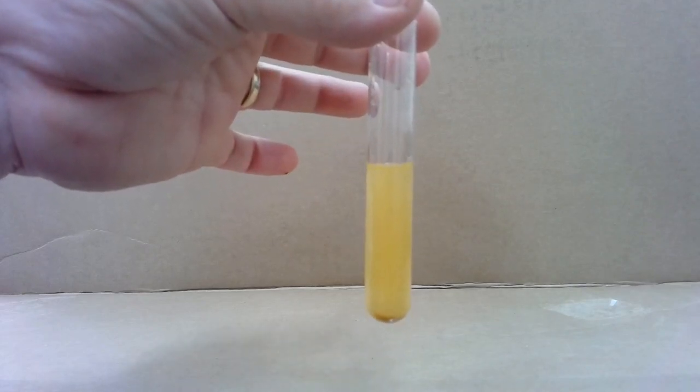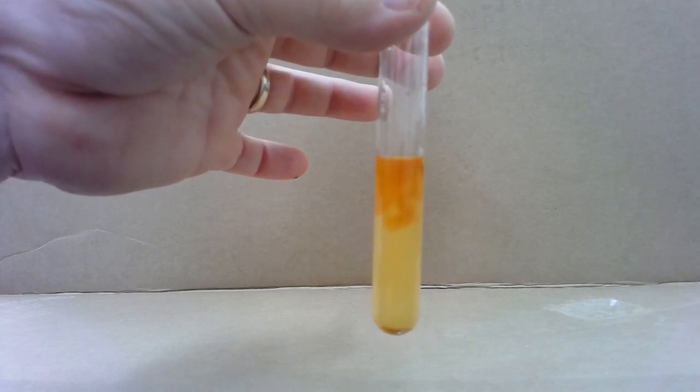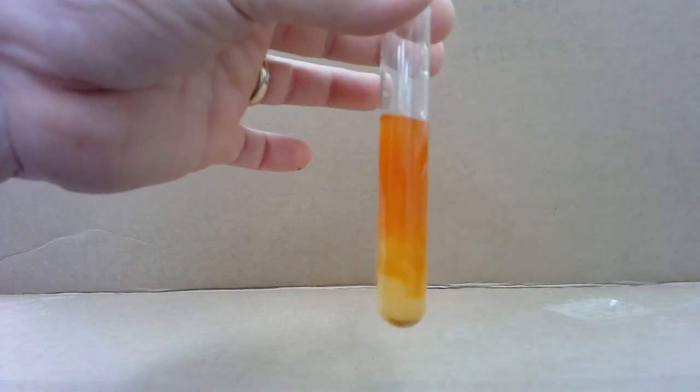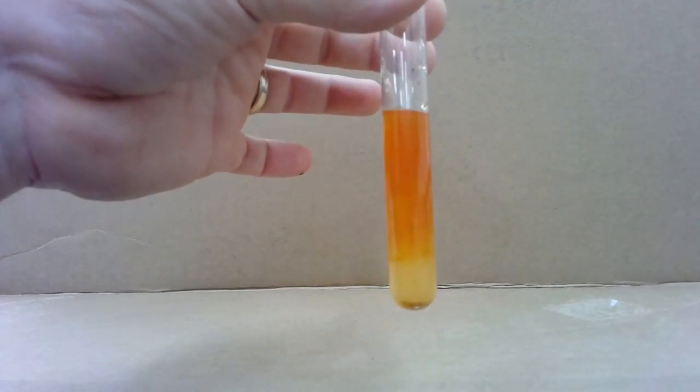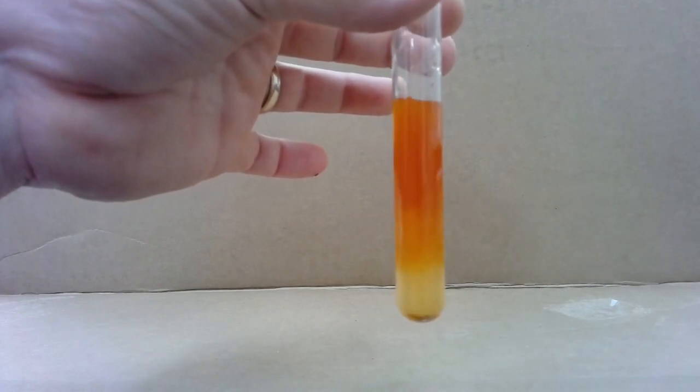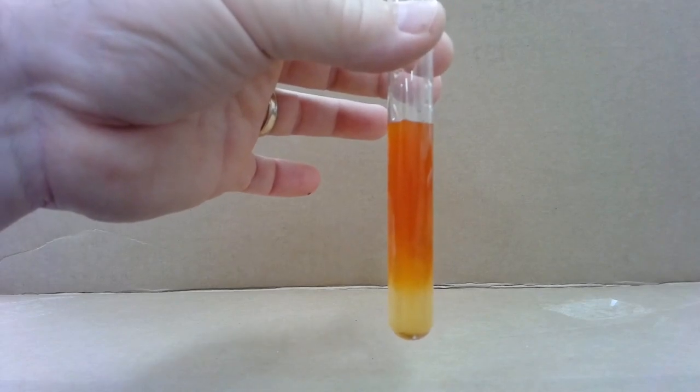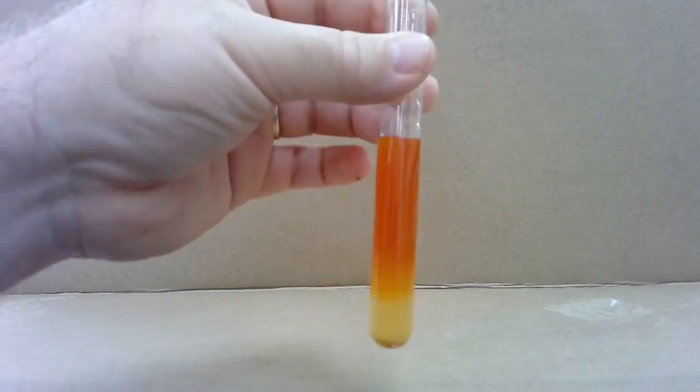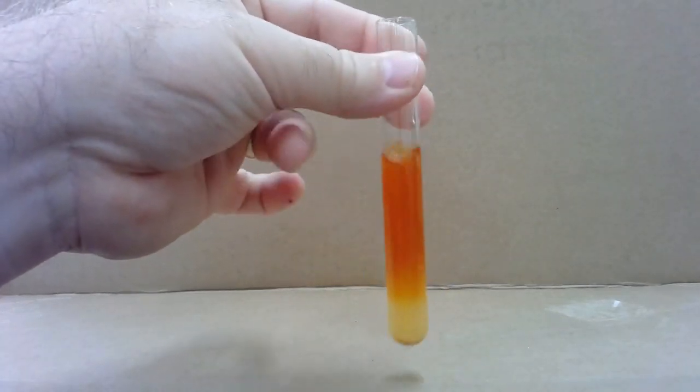But I'm going to add drops of this clear colorless solution to the iron 3 chloride solution. And I hope you can see that it is changing color. It's becoming a redder orange than it was. So the third evidence of chemical reaction would be the unexpected or unusual color change.